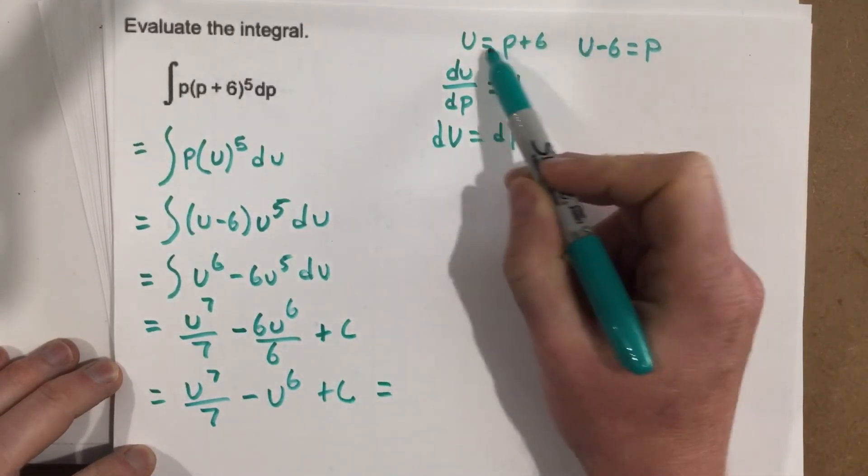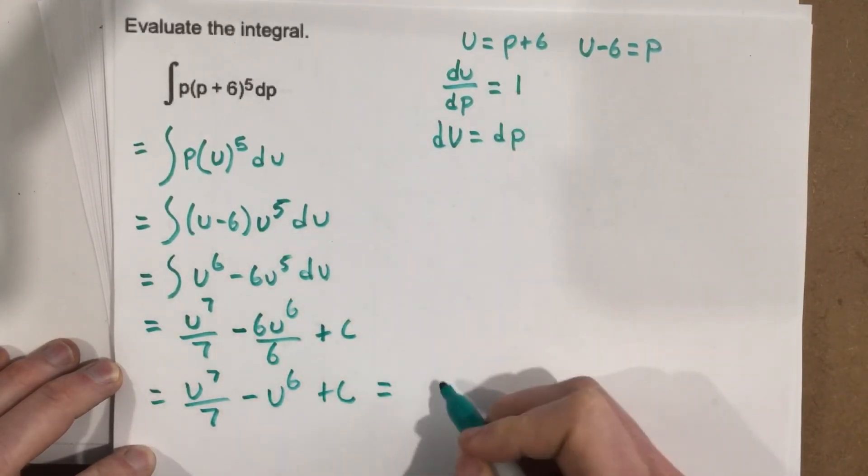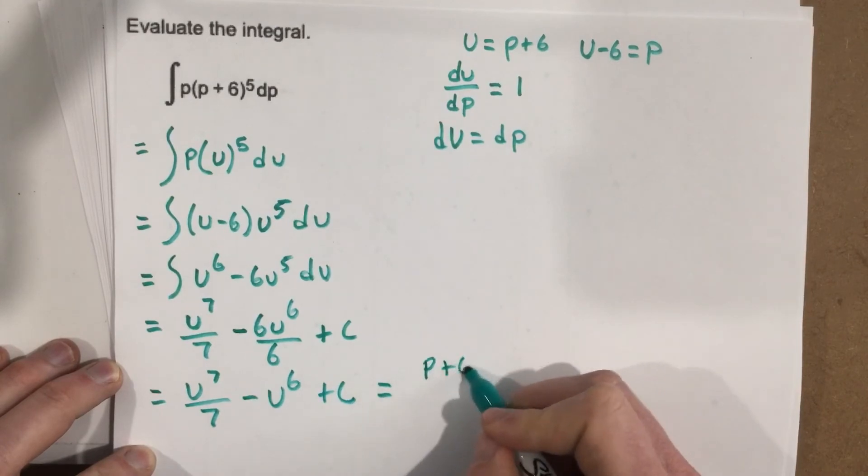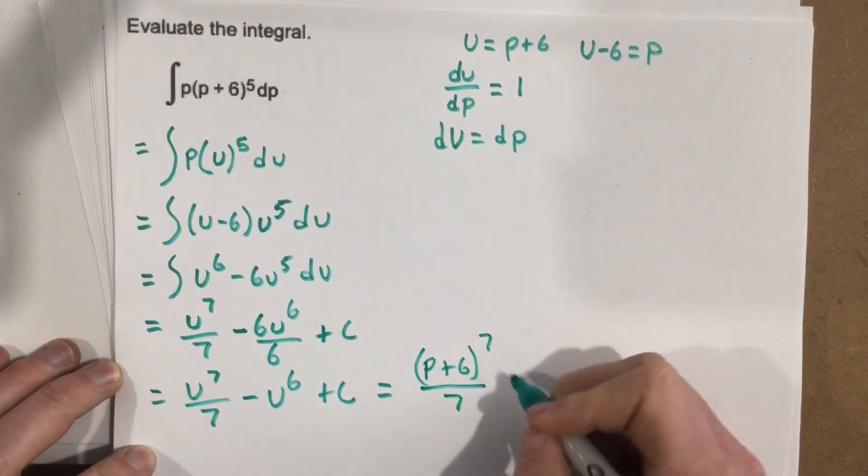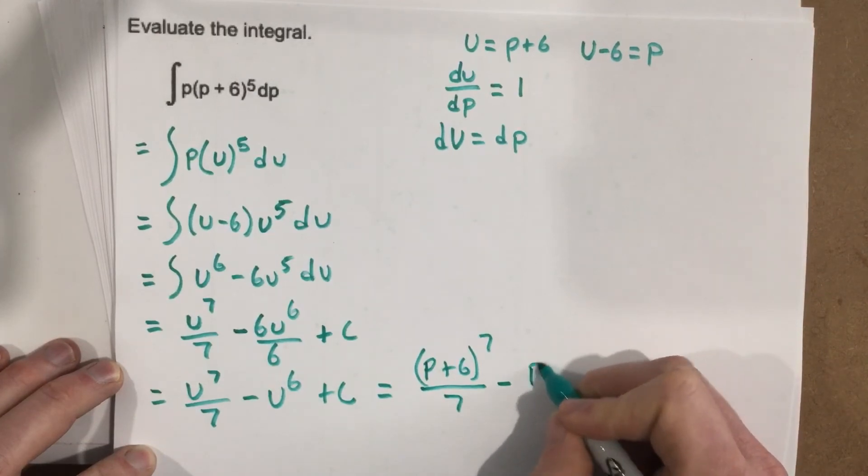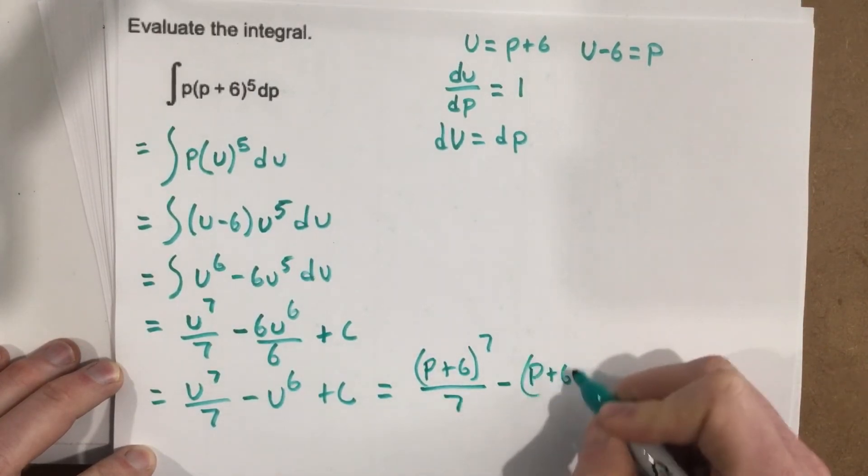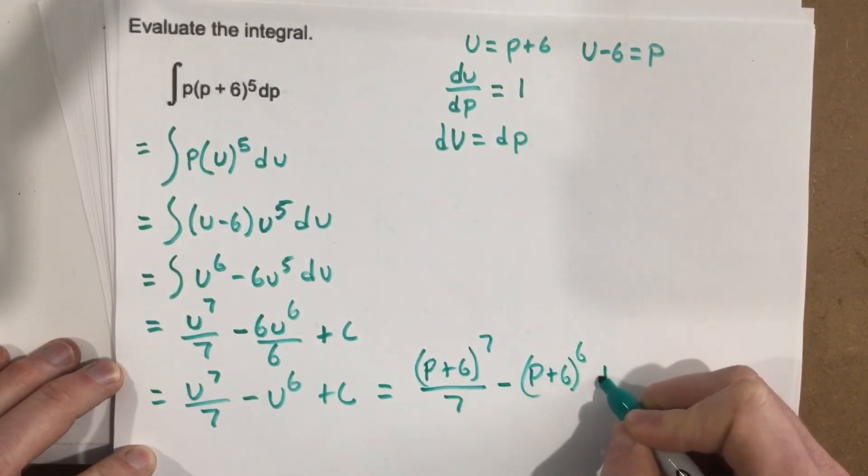We can plug in our u value, and our u value was p plus 6. So we can say that is p plus 6 to the 7th over 7 minus p plus 6 to the 6th plus c.